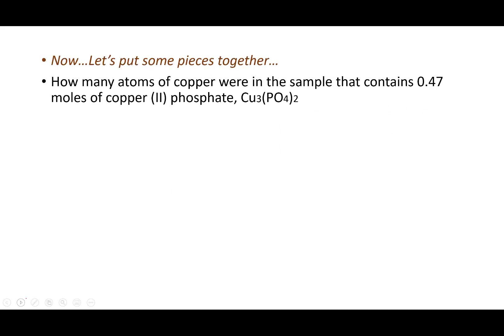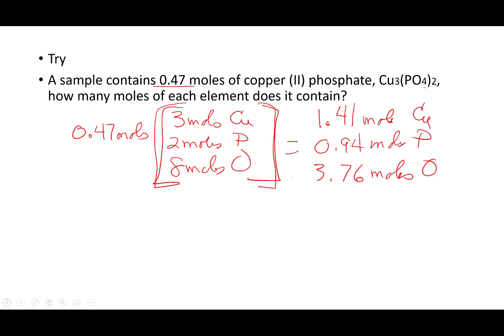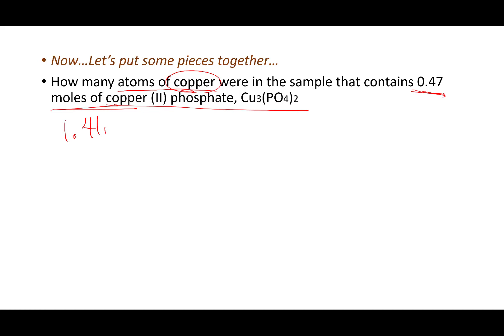You may not feel really, really smart, but you are really, really smart, and we're going to take what we've just done and pull it all together. So what if you get asked: how many atoms of copper are in a sample that contains 0.47 moles of copper(II) phosphate? We're going to pull together something from a previous video. If I've got 0.47 moles of copper(II) phosphate, how many moles of copper do I have? We figured out: 1.41 moles of copper. Now I want to know the number of atoms of copper.